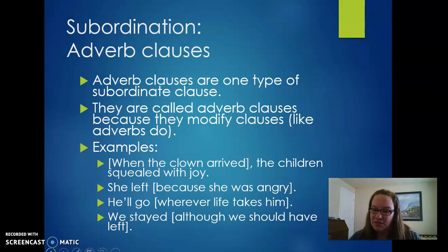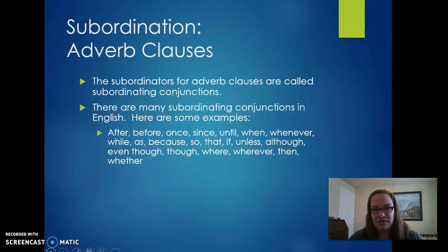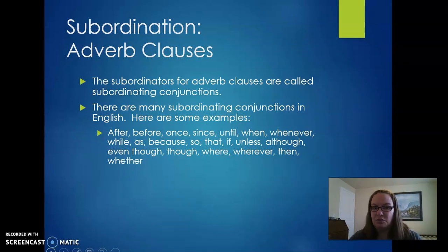Adverb clauses are called adverb clauses because they modify clauses like adverbs can. Relative clauses are modifying nouns — they're more like adjective clauses — but this one is more like an adverb clause because it's modifying clauses. Here are some examples: 'When the clown arrived, the children squealed with joy.' 'She left because she was angry.' 'He'll go wherever life takes him.' 'We stayed, although we should have left.' The bracketed portion with the subordinator is the dependent clause joined with the independent clause. These are also called complex sentences. The subordinators are called subordinating conjunctions. Coordinating conjunctions make compound sentences; subordinating conjunctions make complex sentences.